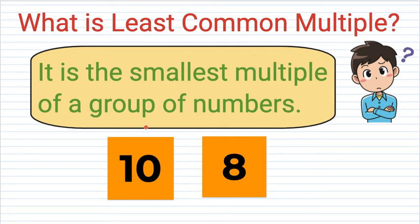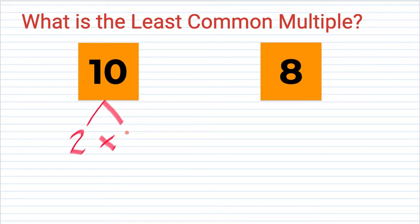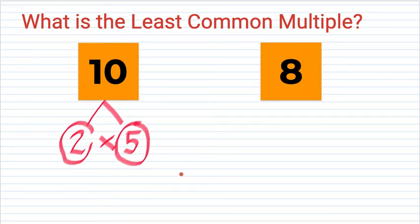Let's find the LCM of 10 and 8 using the factor tree method. For 10, we cannot use 1 times 10, so we use 2 times 5. In the factor tree method, we get the prime factors of a number. Since 2 is prime and 5 is prime, 10 equals 2 times 5.